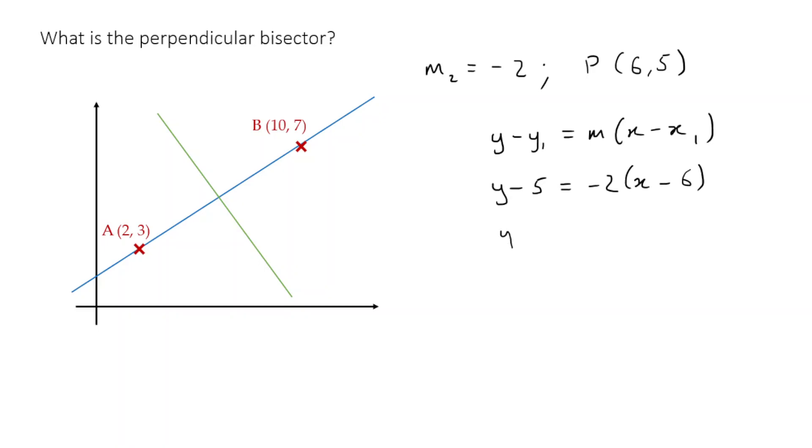And if I just expand that, Y minus 5 is equal to minus 2, X plus 12. And so Y is equal to minus 2, X plus 17. And that is the equation of our perpendicular bisector.